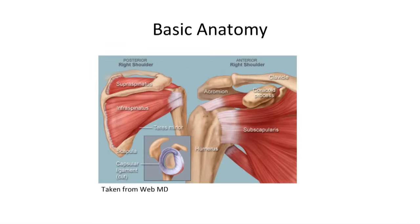The glenohumeral joint is a ball and socket joint, but unlike the acetabulum of the hip, the glenoid fossa is shallow to allow for a greater range of movement. Much of the stability of the joint therefore comes from the rotator cuff tendons and capsular ligament. The result is that the shoulder is somewhat unusual in having moving bones surrounding the rotator cuff tendons, making it susceptible to impingement and tear.